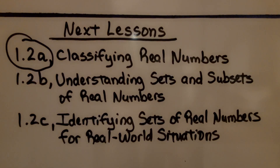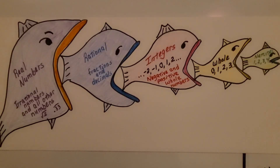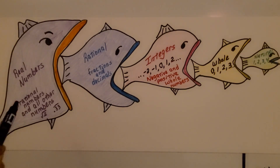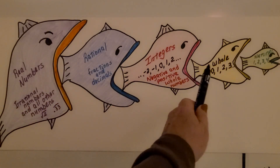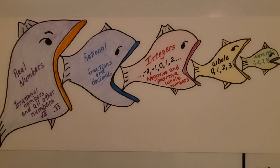The second part is understanding sets and subsets of real numbers. Maybe you can make your own little drawing like this to help you remember and put it in your notes: real numbers include irrational numbers and rational numbers, and rational numbers include integers, whole numbers, and natural numbers. I hope you have a wonderful day and I hope you join me for the next part of the lesson. Bye.